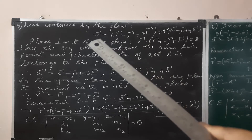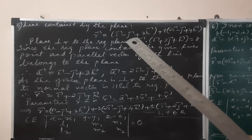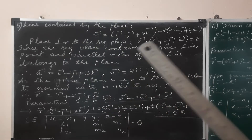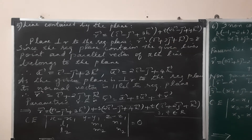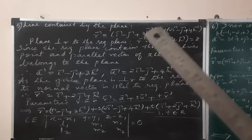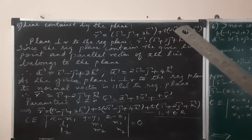The line equation format is R vector equals a vector plus t times u vector. Here, a vector is the position vector of a point on the line (independent), and u vector is the parallel vector (one parameter dependent). So this is the a vector and this is the u vector.